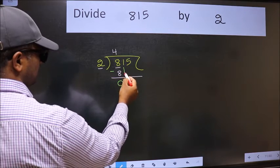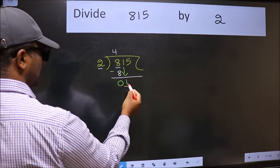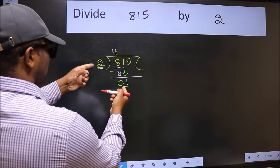After this, bring down the beside number. So 1 down. Now here we have 1 and here 2. 1 is smaller than 2.